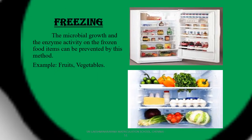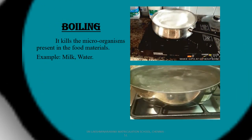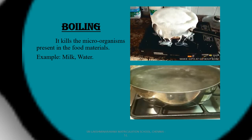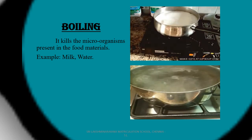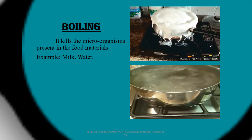Freezing: in this method, we keep the food items in the refrigerator. It prevents the growth of microorganisms and the enzyme activity of the food items. Examples include fruits, vegetables, etc. Boiling: there will be some microorganisms present in the food; if we boil it, it kills the microorganisms. Examples include water and milk.